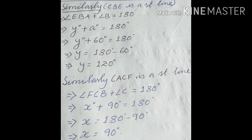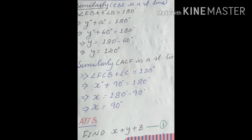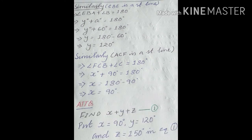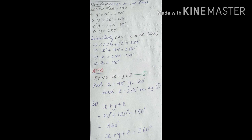We now have all three exterior angles. As the question asks, we need to find x plus y plus z. Substituting the values: x is 90 degrees, y is 120 degrees, and z is 150 degrees. So x plus y plus z equals 90 plus 120 plus 150, which gives us 360 degrees. Therefore x plus y plus z equals 360 degrees.